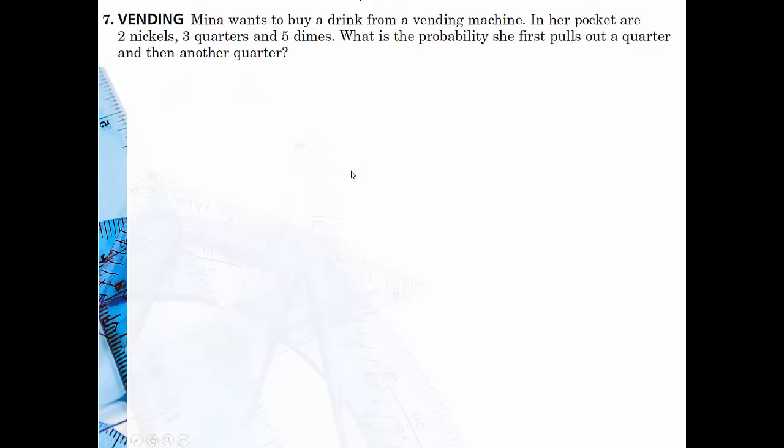Mina wants to buy a drink from a vending machine. In her pocket are two nickels, three quarters, and five dimes. What is the probability she first pulls out a quarter and then another quarter? The probability of pulling out a quarter on the first try is three out of ten coins. Then she has two quarters left out of nine. So you just multiply both of those together, which would be six over 90, or basically one over 15.